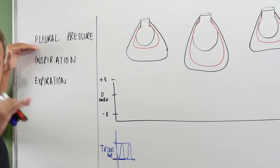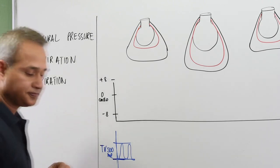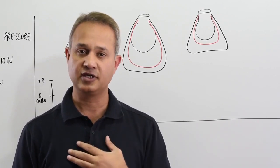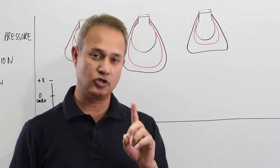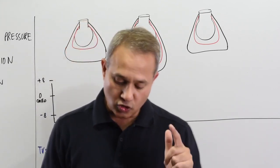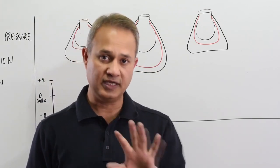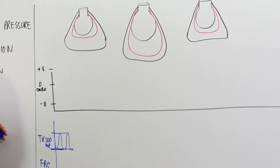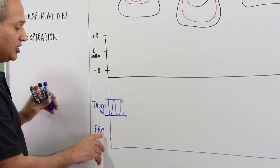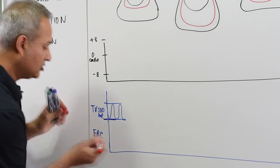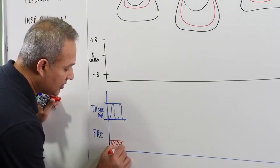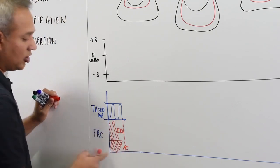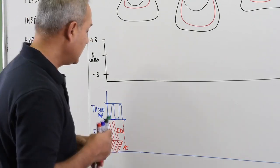We'll be talking about pleural pressure at a restful state, then inspiration and expiration. At the restful state, I exhale the normal tidal volume and stop. The air present in the lung is measured by the functional residual capacity (FRC), which is the residual capacity plus the expiratory reserve volume (ERV). The tidal volume sits on top of that.